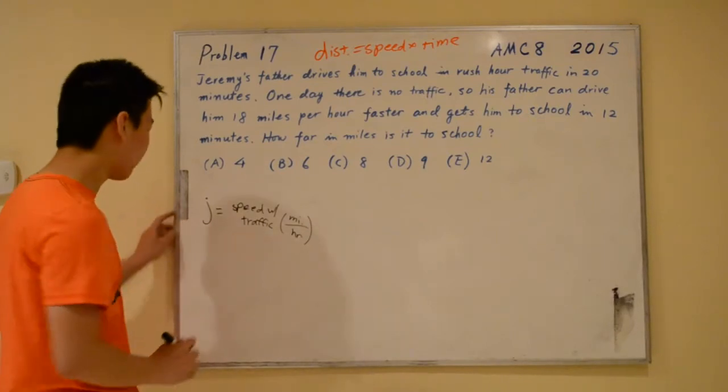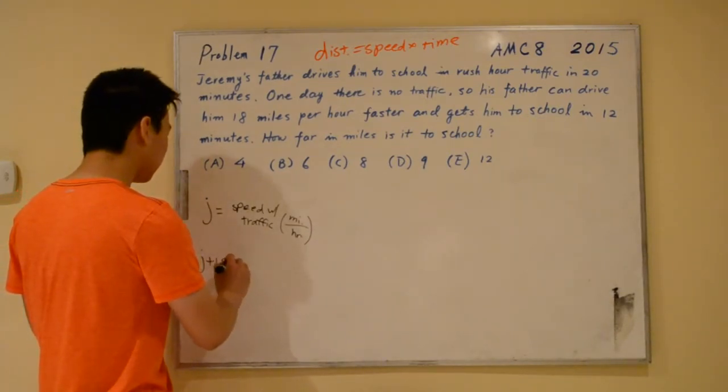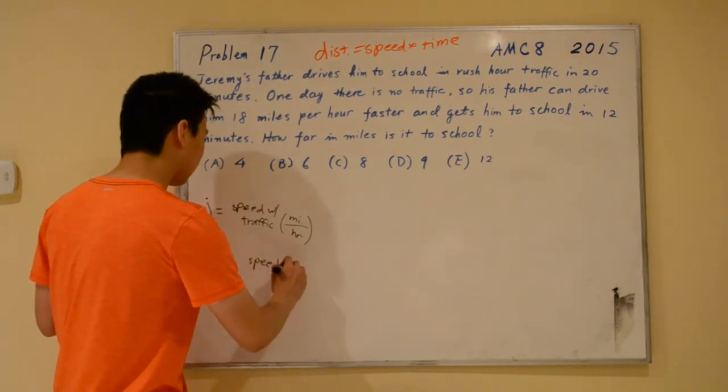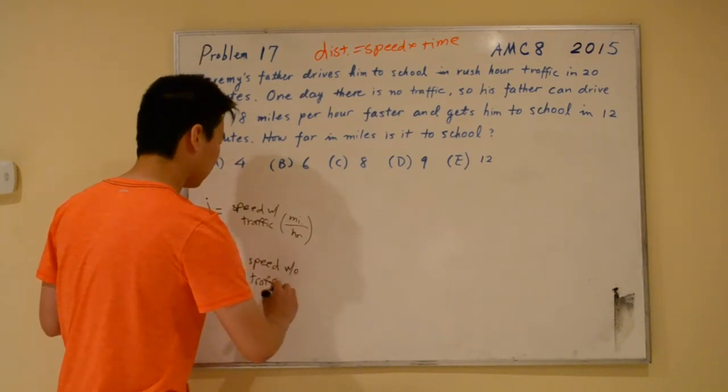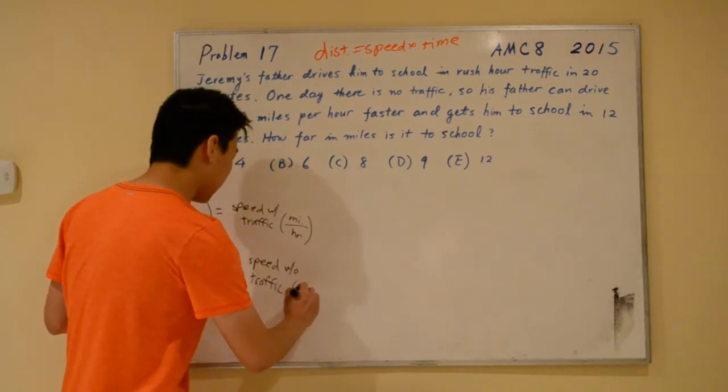If j is the speed with traffic, j plus 18 is the speed without traffic. And again, this is in miles per hour.